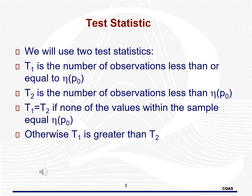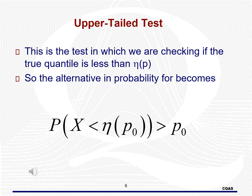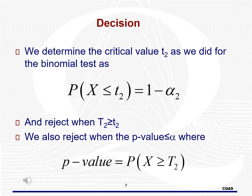For the upper-tailed test, we are checking to see if the true quantile is actually less than the hypothesized value. If the alternative is true, then the hypothesized quantile value would actually have a larger percentage of the data fall below it than we hypothesized. For the upper-tailed test, we determine T2 in the same manner as the binomial test, utilizing the binomial distribution with sample size n and p0 as pi. We then reject when T2 is greater than or equal to the critical value T2. The p-value is found by computing the probability that x is greater than or equal to the observed value T2.